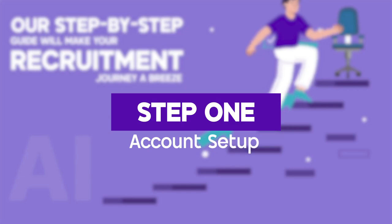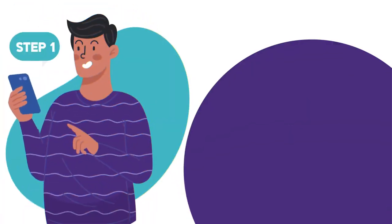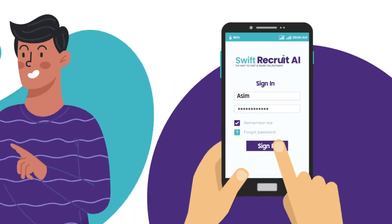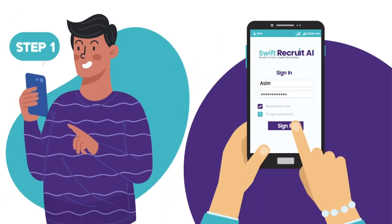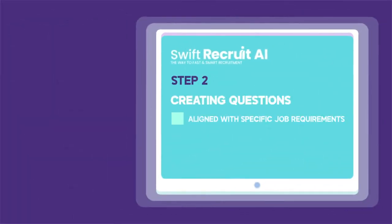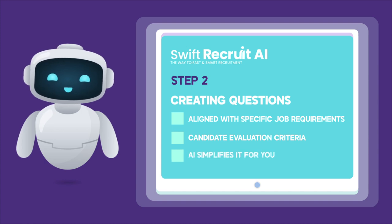Let's get started with step 1: account setup. It all begins with joining our platform. Sign up for an account and gain access to a wide range of innovative AI-driven recruiting tools. This involves creating questions aligned with specific job requirements and candidate evaluation criteria. Don't worry, our AI simplifies it for you. Just navigate to the questions tab and let our AI assist you in creating your desired questions.